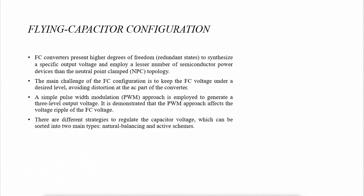The main challenge of the FC configuration is to keep the FC voltage under a desired level, avoiding distortion at the AC part of the converter. A simple Pulse Width Modulation (PWM) approach is employed to generate a three-level output voltage. It is demonstrated that the PWM approach affects the voltage ripple of the FC voltage. There are different strategies to regulate the capacitor voltage, which can be sorted into two main types: natural balancing and active schemes.